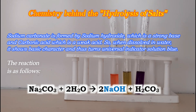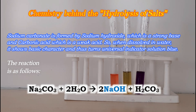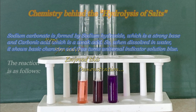Sodium carbonate is formed by sodium hydroxide, which is a strong base, and carbonic acid, which is a weak acid. So when dissolved in water, it shows basic character and thus turns universal indicator solution blue. The reaction is: Na2CO3 + H2O → 2NaOH + H2CO3.